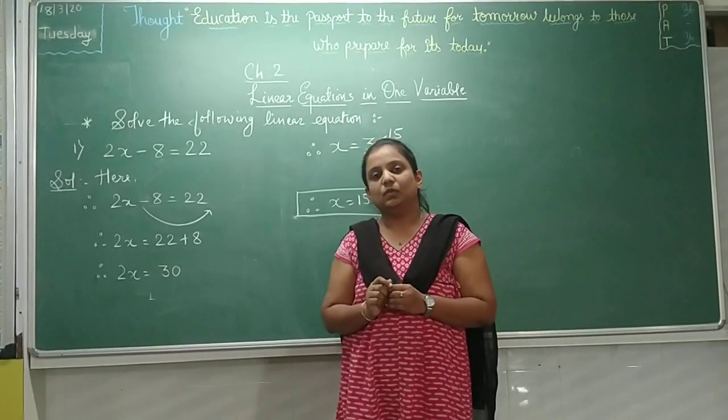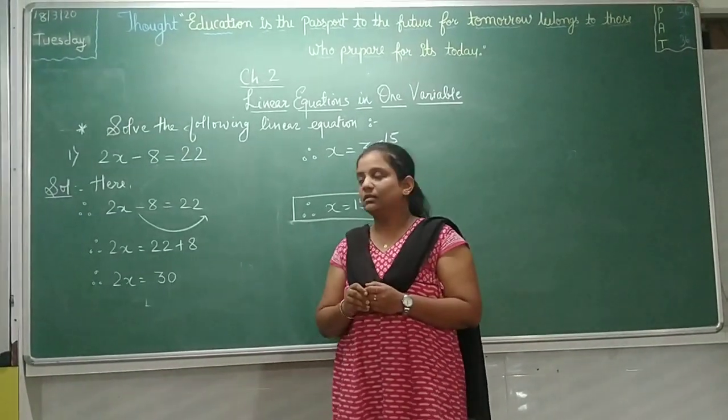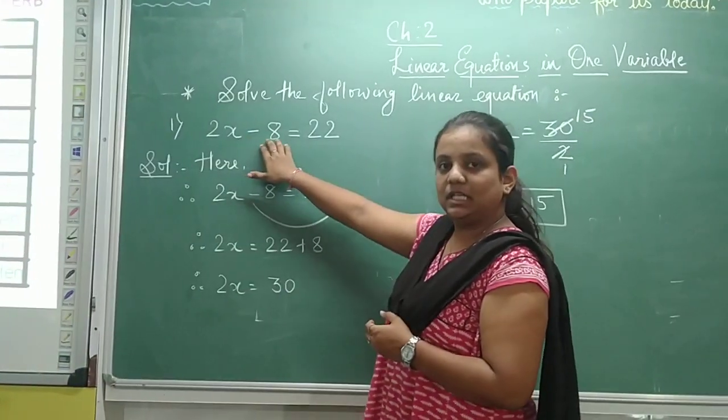So now to find out the unknown value or the value of that variable, let us solve a sum based on that. Now see, this is a linear equation: 2x minus 8 equals to 22.